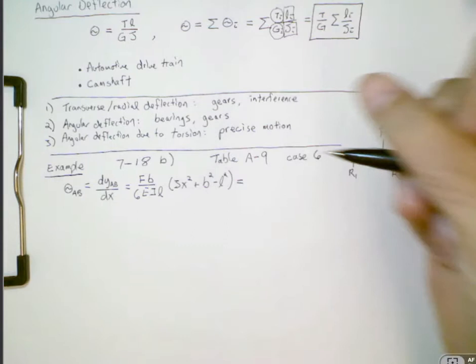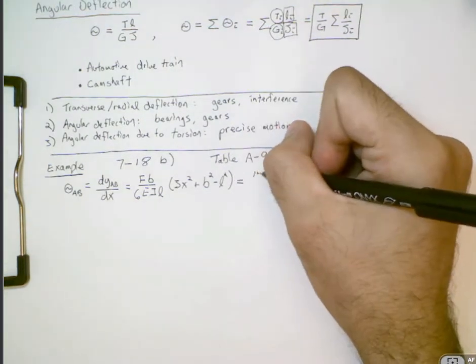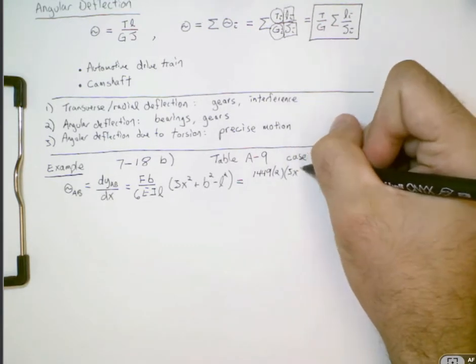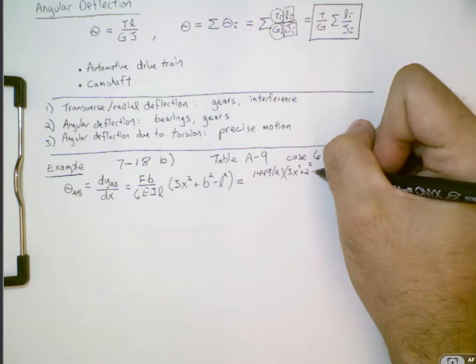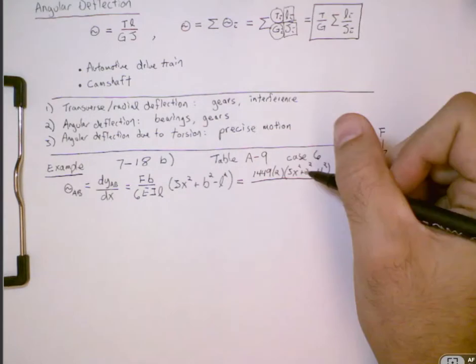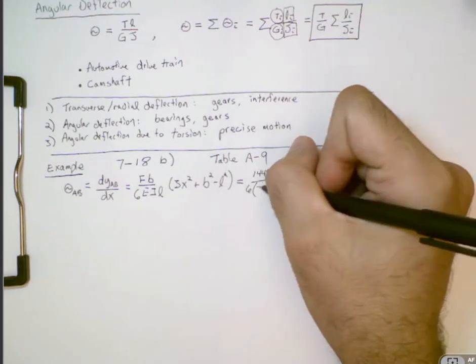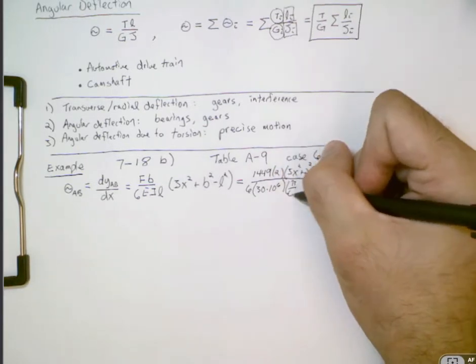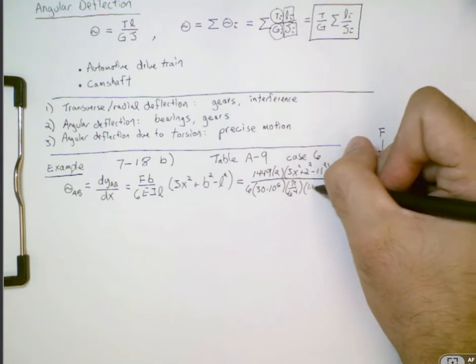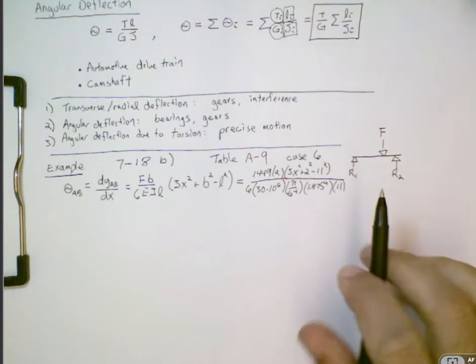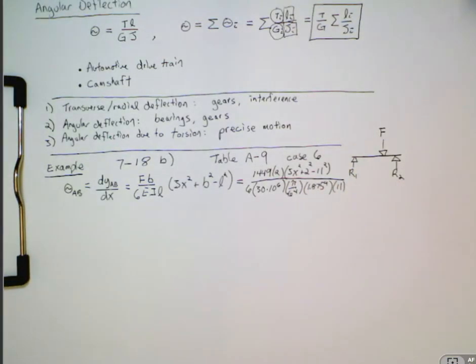So if we plug all the numbers in, then we end up with this formula, 1449 times 2 times 3x squared plus 2 squared minus 11 squared, so 11 being this total length of the shaft. And then 6 times 30 times 10 to the 6 times pi over 64 times 1.875, the diameter to the power of 4, all times 11. So this is a function of x, everything else is known.